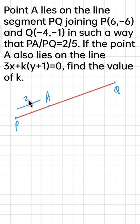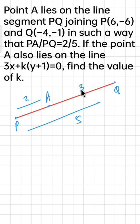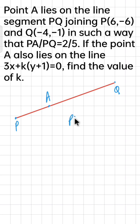अगर PA 2 है तो PQ 5 है। तो खुद ही सोचिए — अगर PQ 5 है और PA 2 है, तो AQ ratio के हिसाब से 3 होना चाहिए। तो समझ गए ना — अगर PA and PQ का ratio 2 is to 5 है, तो PA and AQ का ratio 2 is to 3 होगा। आई होप ये समझ आ गया।